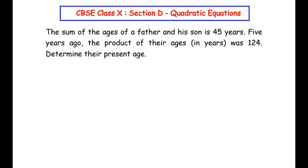The problem states: the sum of the ages of a father and his son is 45 years. Five years ago, the product of their ages in years was 124. Determine their present ages.